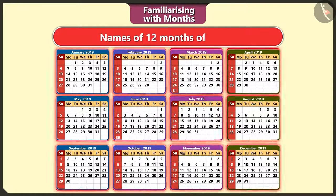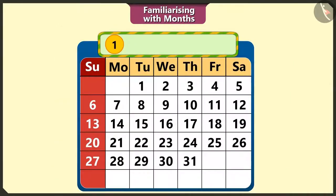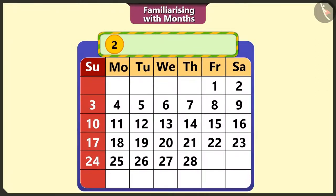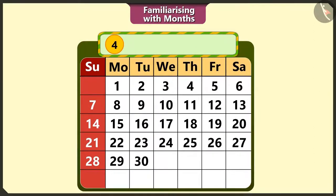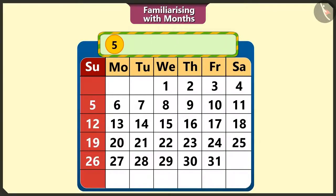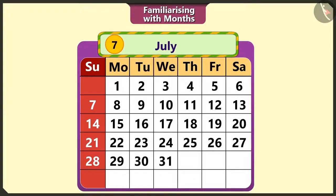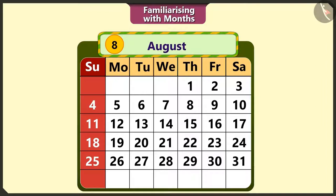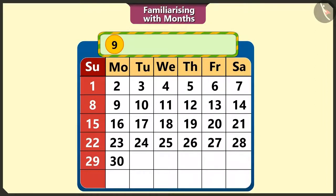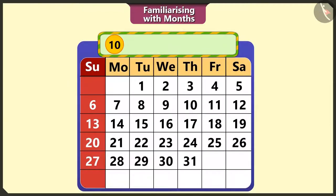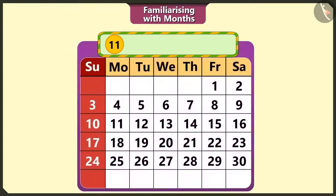Look, there are 12 months in a year. These are 1st January, 2nd February, 3rd March, 4th April, 5th May, 6th June, 7th July, 8th August, 9th September, 10th October, 11th November and 12th December.